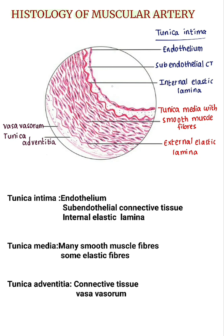The internal elastic lamina is more prominent. You can see it is clearly visible as a wavy structure. It is more prominent due to the underlying smooth muscle fibers in the tunica media.